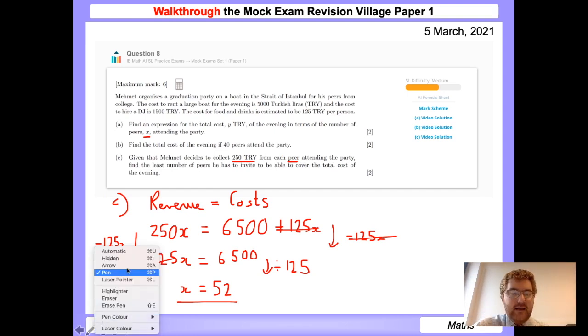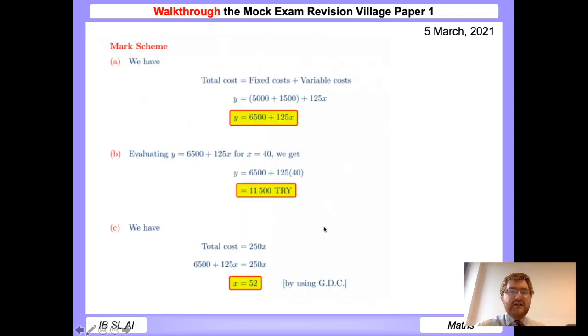Now, we don't even need to do this in our head or anything like that. We can now use our GDC. And this gives us the answer here of 52, which is the least number of people to cover the total costs of the evening. So our answer will be 52. Again, you can check the mark scheme here and go through what I have talked through in this question.